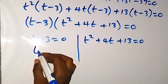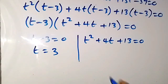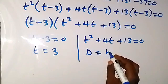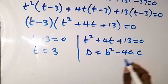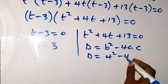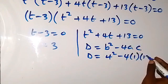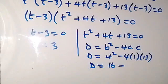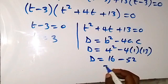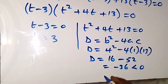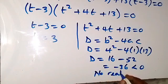From the first case, t equals 3. For the quadratic, we check the discriminant: b squared minus 4ac equals 4 squared minus 4 times 1 times 13, which gives 16 minus 52 equals negative 36. Since the discriminant is less than zero, there is no real solution from this side.